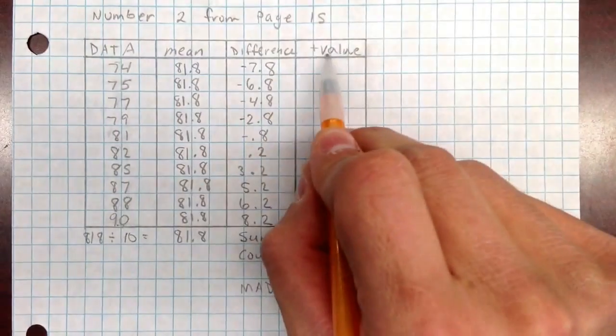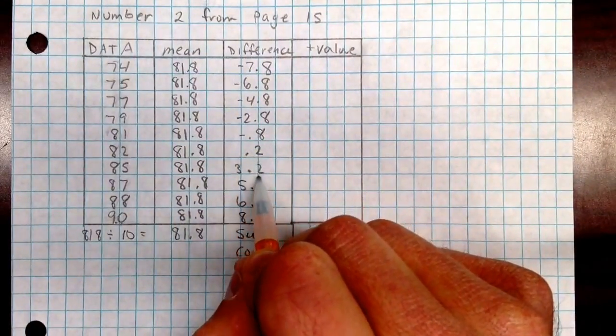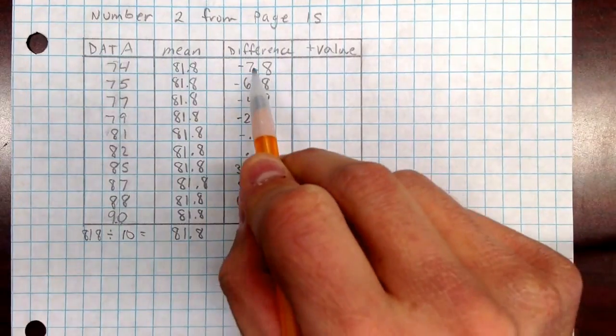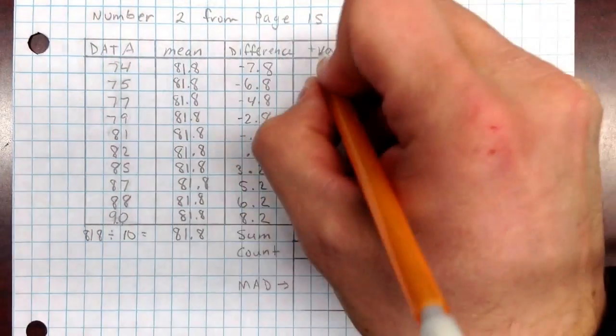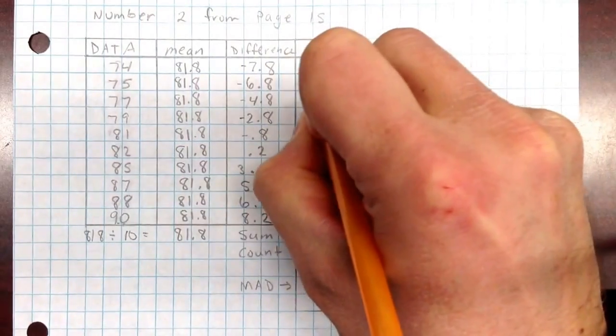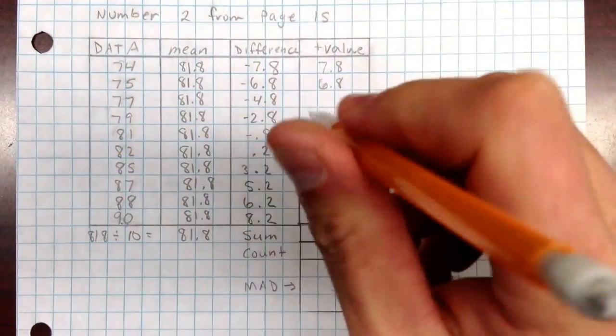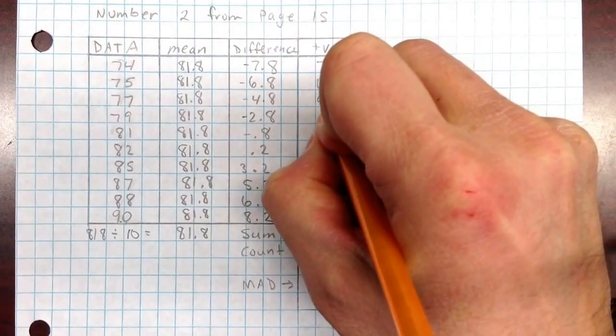Now we're going to take this positive value of these, so all these have to be positive. These already are positive, so let's copy them over. These five here will copy over as positive and these will become positive. So just make this negative 7.8 into 7.8. Make the negative 6.8 into 6.8. And so on for the rest.